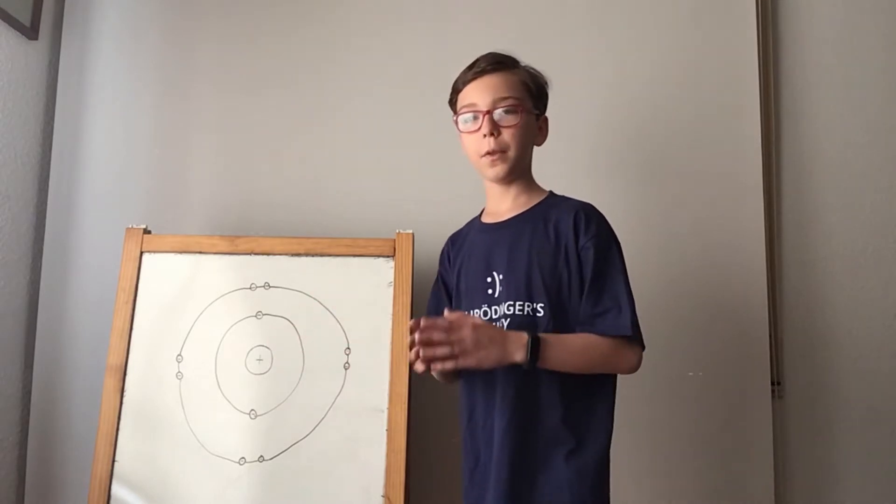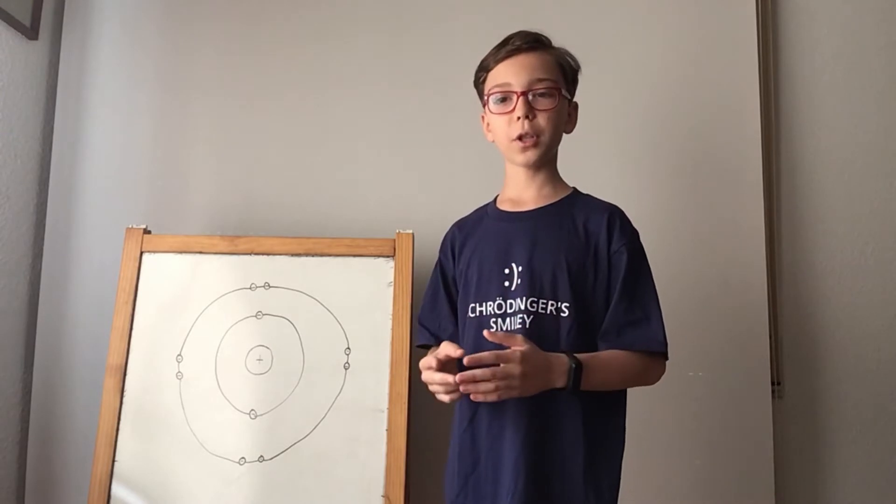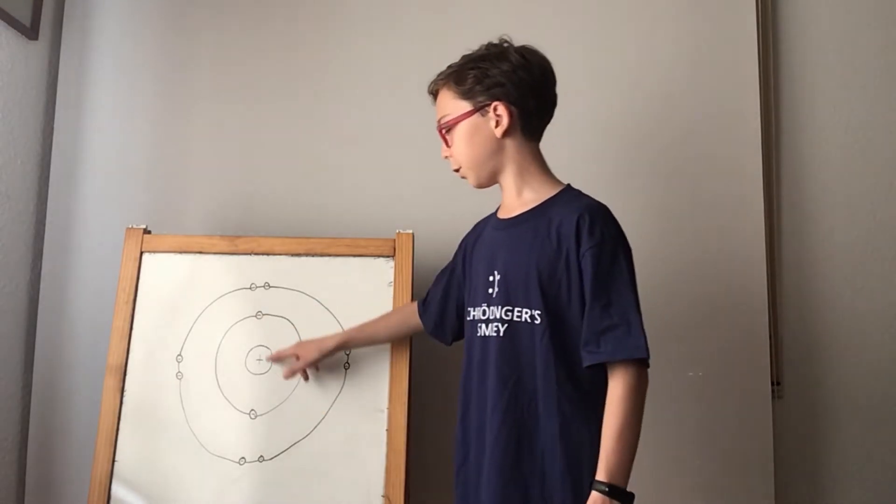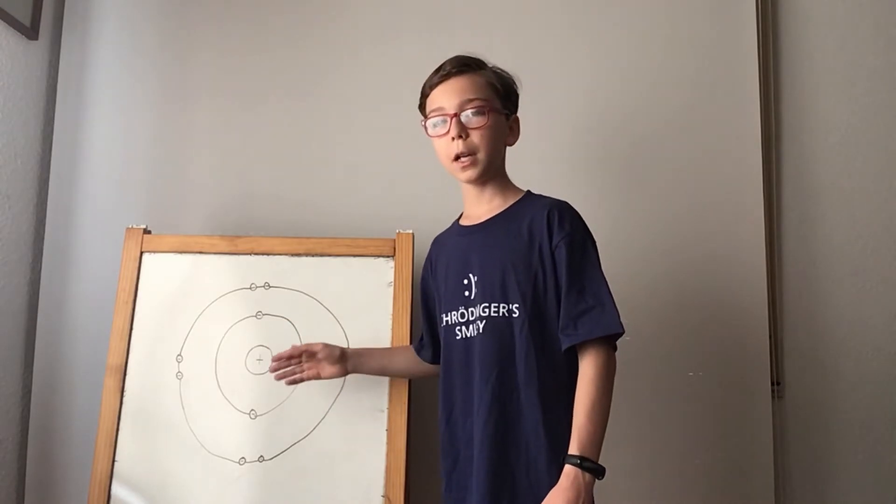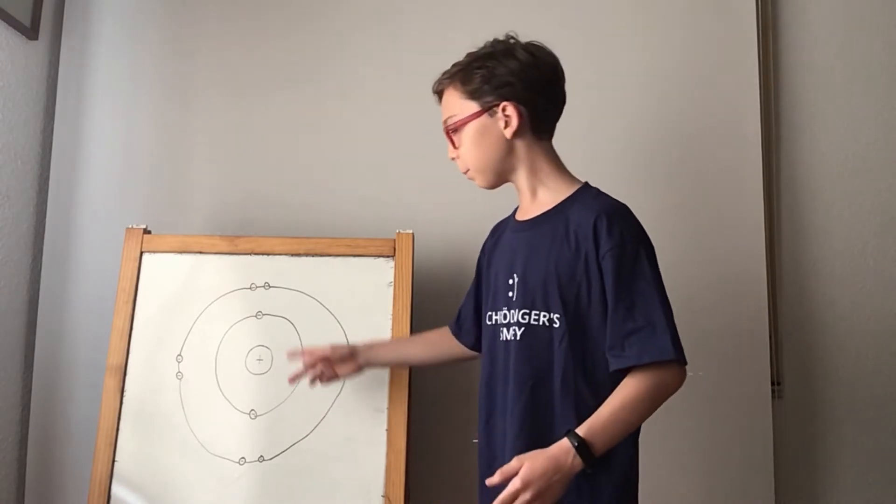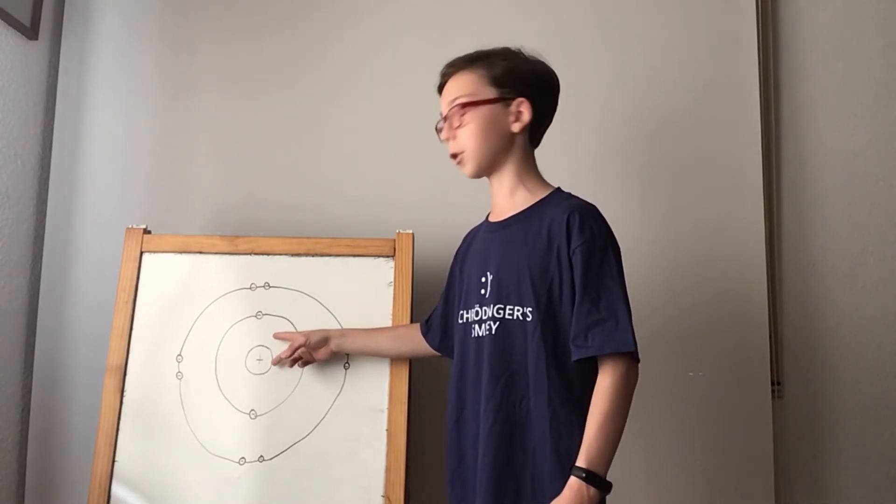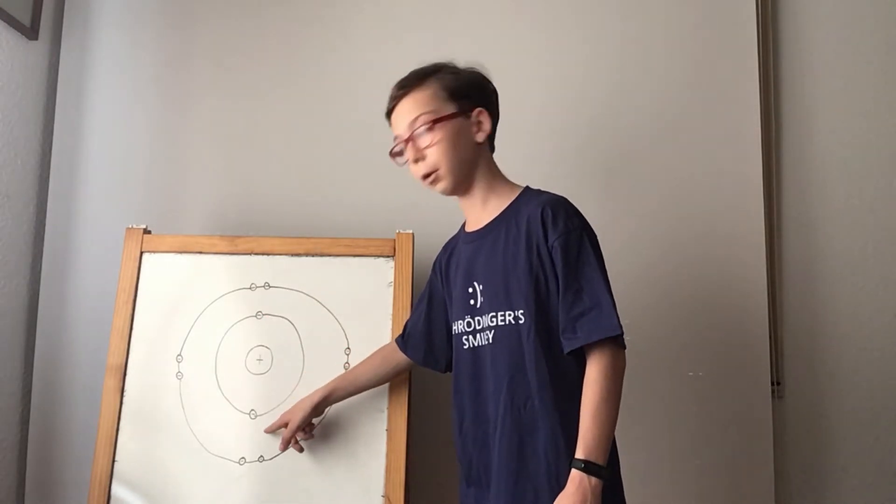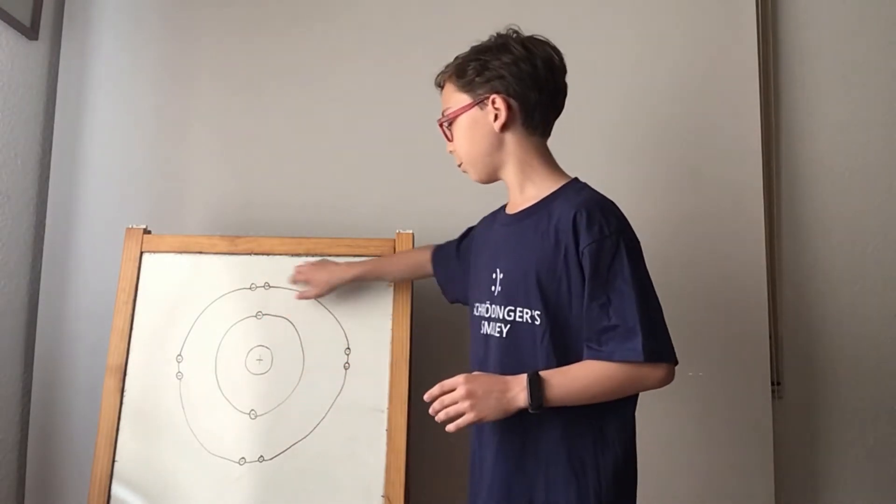The Pauli exclusion principle says that no two particles can be in the same state. So for example, these two have the same energy and so they can't have the same spin. By the way, the energy is actually angular momentum. But they can't have the same spin. So if this one has spin up, this one has spin down.